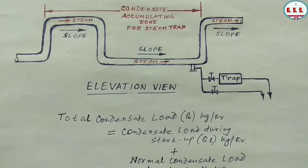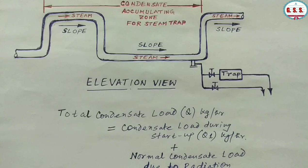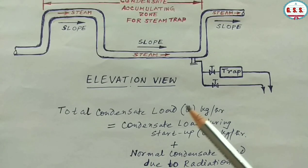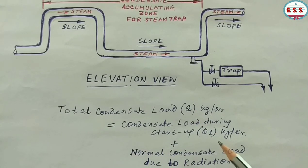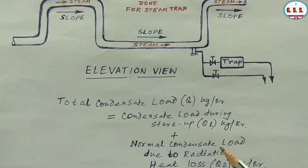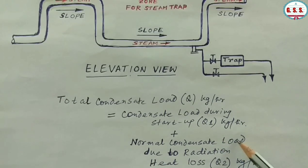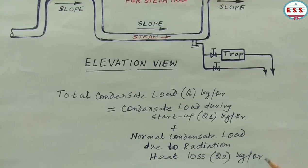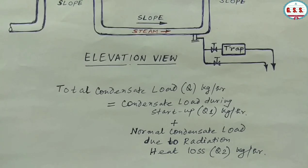For designing a steam trap, total condensate load Q (kg/hr) equals condensate load during startup Q1 (kg/hr) plus normal condensate load due to radiation heat loss Q2 (kg/hr).